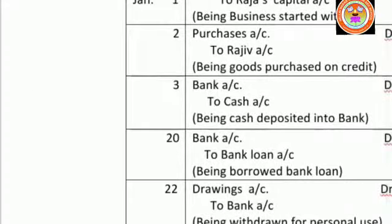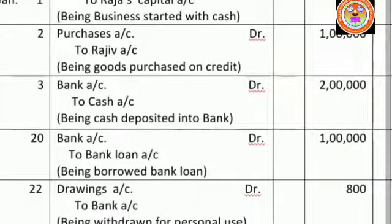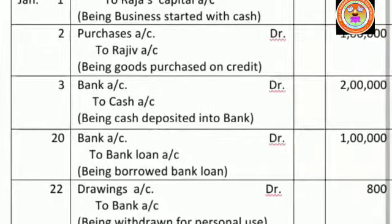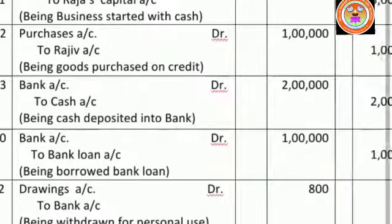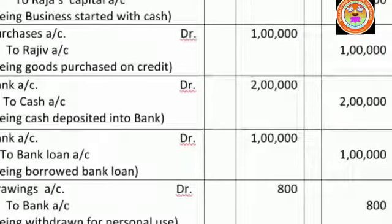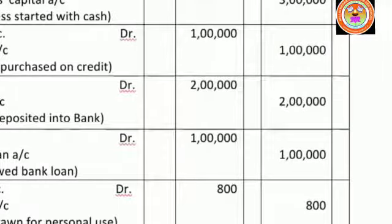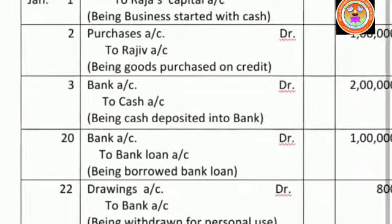Then put the question number and allot the columns. First column for date, then particulars, then leave a small space for ledger folio number, then one amount column for debit and one more amount column for credit — these are the 5 columns you have to allot.